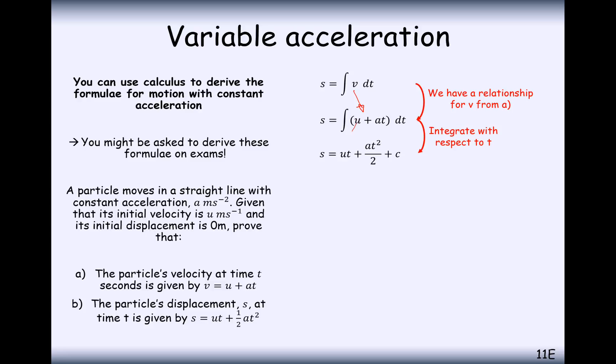So integrate U with respect to T and you get U times T. Think of U as the number 3, that would just be 3T. So it's just here U plus A T squared over 2 plus C. Think of it as like a 5T, it would be 5 over 2T squared. So this is what we get here.